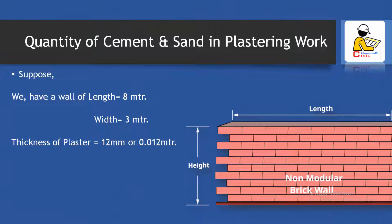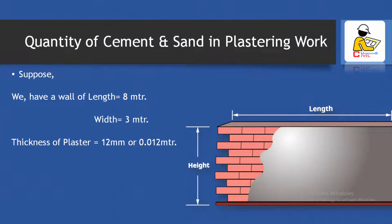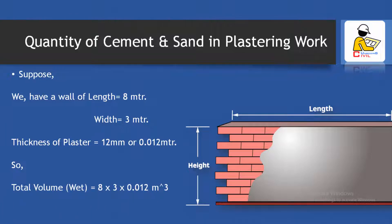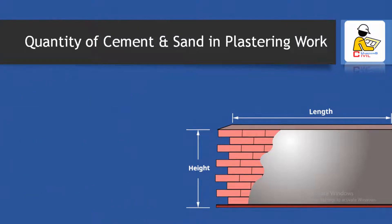As we know, plaster is a combined mixture of cement, sand, and water. After mixing with water, the mortar gets prepared and placed as per our requirement. So the total wet volume comes to 8 meter × 3 meter × 0.012 meter, which equals 0.288 cubic meter.